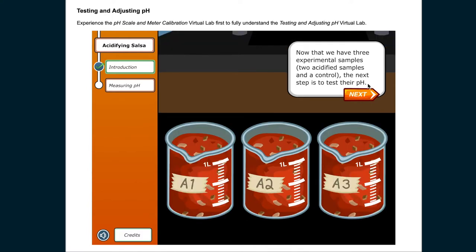Now that we have 3 experimental samples, 2 acidified samples and a control, the next step is to test their pH. We will take 2 smaller samples from each of A1, A2, and A3 and test each of these smaller samples 2 times.